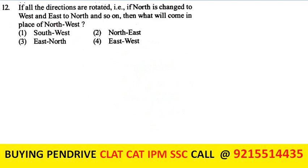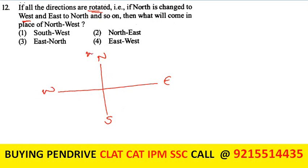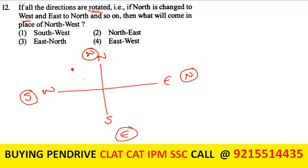If all directions are rotated and north is changed to west, then the new arrangement becomes: old north → west, old west → south, old south → east, old east → north. The question asks what comes in place of north-west. North-west becomes south-west in the new system. The first option is the answer.